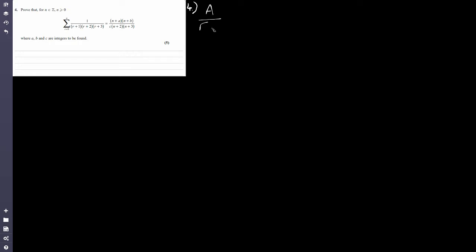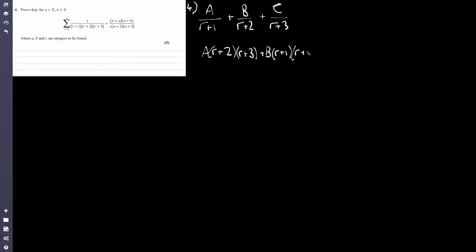For any question like this, we first need to work out partial fractions to get into the correct form before working on the summation. I'll just put in the line of working and give the answer. We have A over (r+1) plus B over (r+2) plus C over (r+3). Multiplying through: A·(r+2)(r+3) plus B·(r+1)(r+3) plus C·(r+1)(r+2).